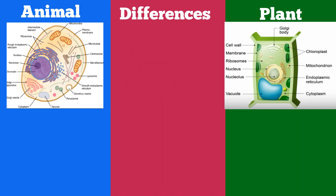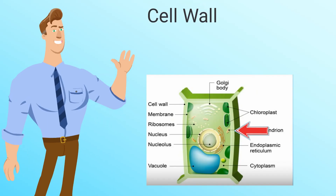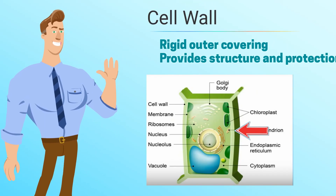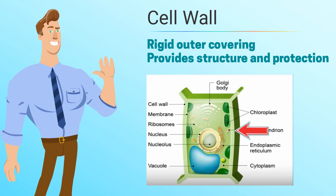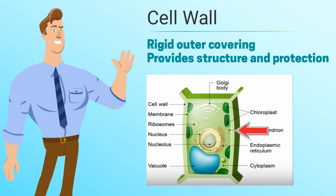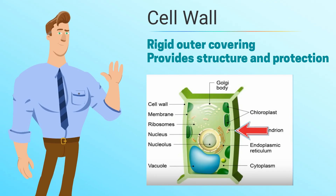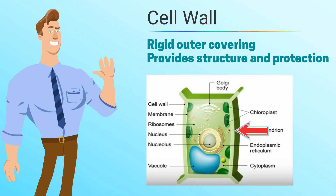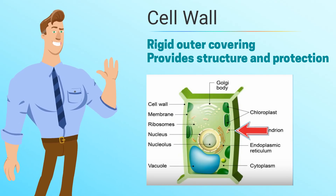Now let's focus on some of the differences. A plant cell has a cell wall. The cell wall is a rigid outer covering of a plant cell that provides structure and protection. Animal cells do not have a cell wall.